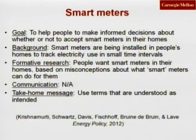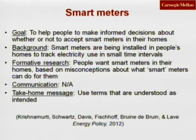The third project is on smart meters. The goal was to help people make informed decisions about whether or not to accept smart meters in their homes. Smart meters are being installed by electricity companies to track electricity use in small time intervals — maybe as small as 15 minutes — with the eventual goal of charging different rates depending on demand at the time. Electricity is in high demand during hot summer afternoons when everyone is running air conditioners, putting a lot of demand on the grid. Electricity companies have to run additional power plants to meet that demand, which is expensive and bad for the environment. Electricity companies are concerned that people may not like smart meters or the dynamic pricing plans associated with them.